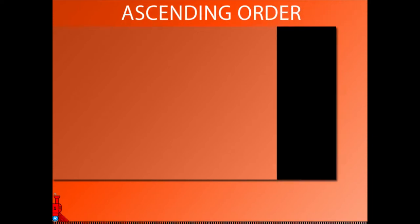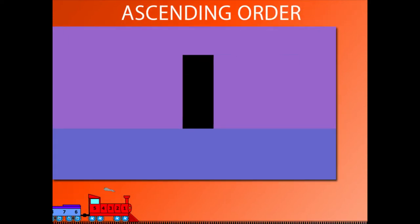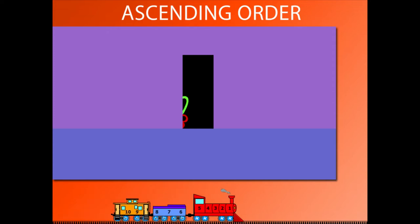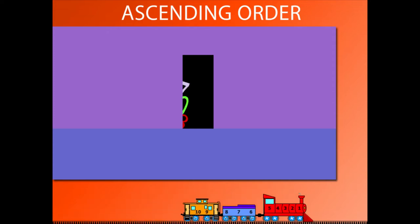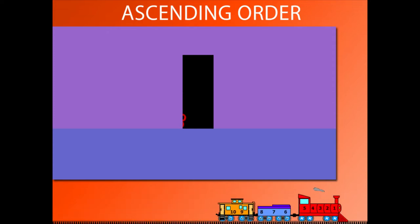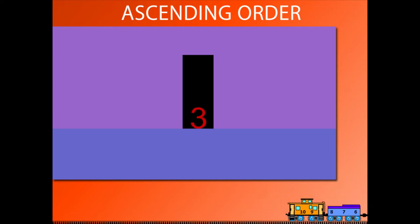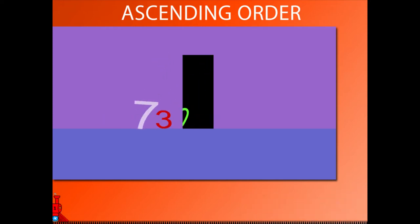Ascending order: numbers beginning from the lowest to the highest are said to be in ascending order. Here come numbers from behind the wall — 3, 7, and 0.